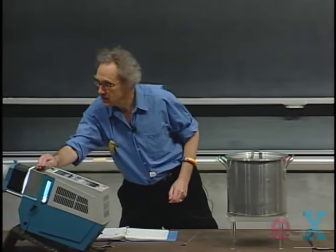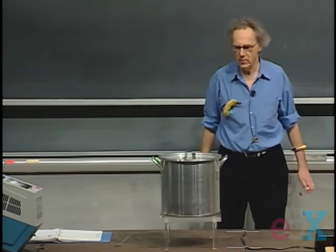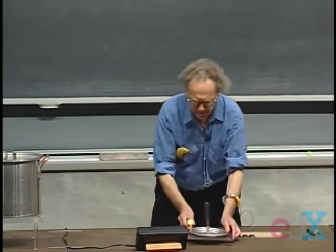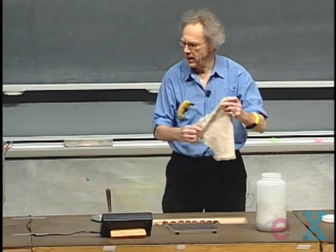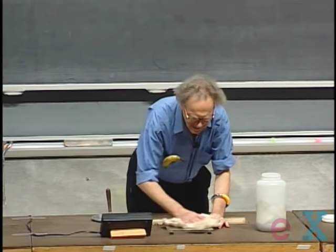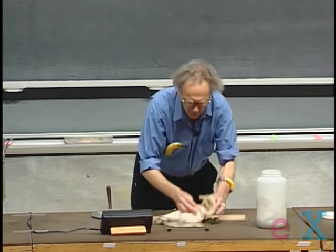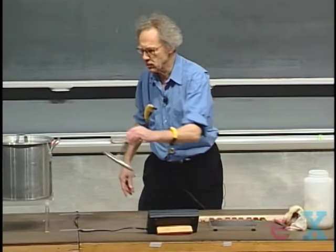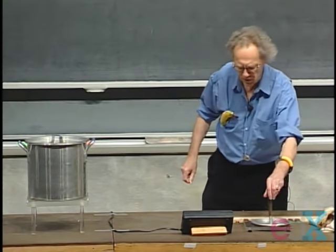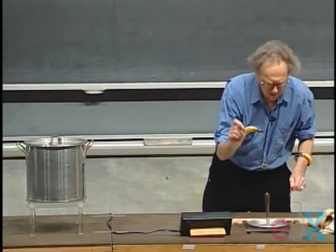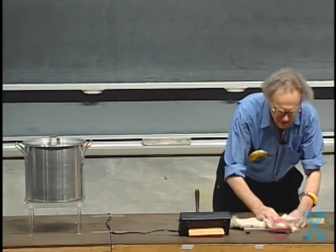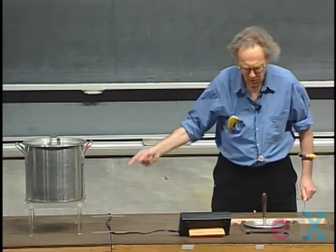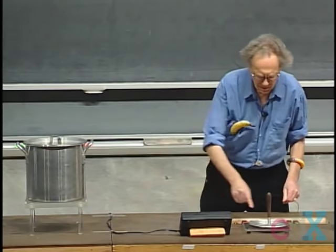Here we see the electroscope. I'm going to charge this cooking pan with my favorite technique, the electrophorus. We have the cat fur and the glass plate. I'll rub this first with the cat fur, put it on, put my finger on, get a little shock, charge up the pan — and repeat this several times to make sure I get enough charge on there.